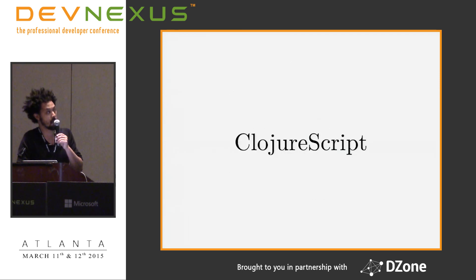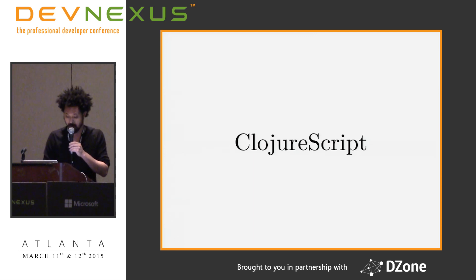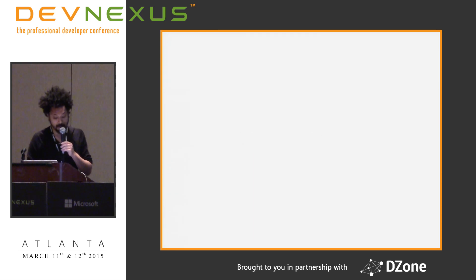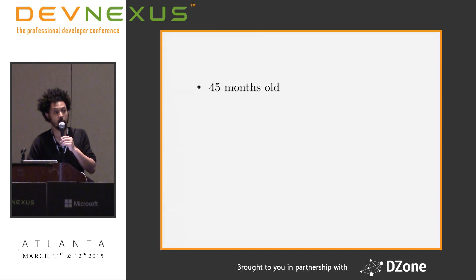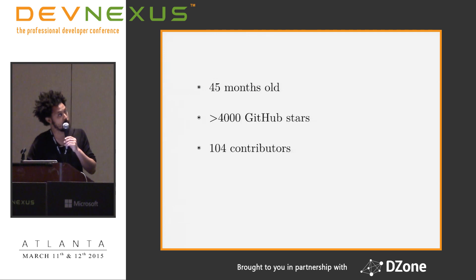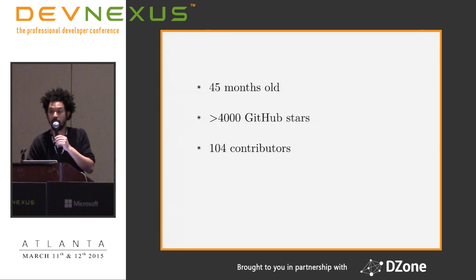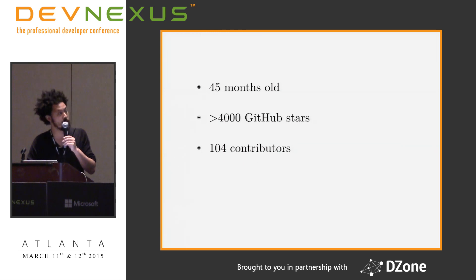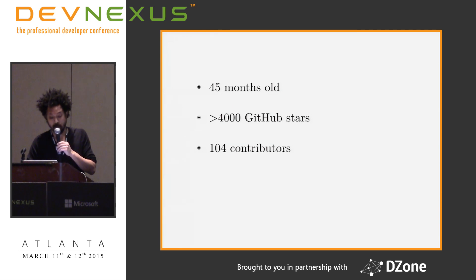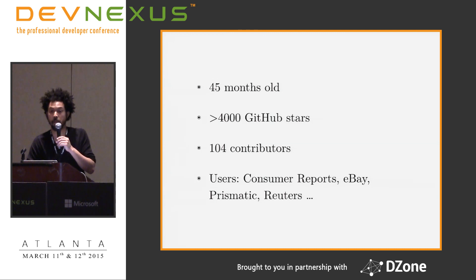We still believe in the McCarthy dream — this is why we do ClojureScript. ClojureScript is now 45 months old; it's not a young project. It has greater than 4,000 GitHub stars, making it a relatively popular open source project, with 104 contributors who have submitted patches to Jira. It's used in production at quite a few companies you may have heard of: Consumer Reports, eBay, Prismatic, Reuters. It's not a toy piece of technology.